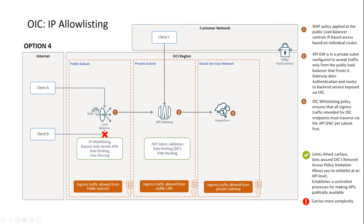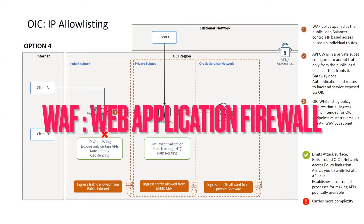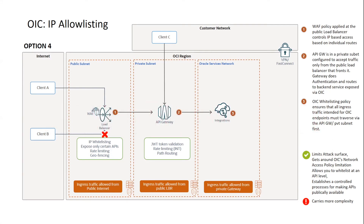So this is more fine-grained control — you can do this at an API level. Also, because we have a WAF policy, you can benefit from other features of the WAF. For those who don't know, WAF stands for Web Application Firewall. It has a bunch of access control policies, and IP whitelisting is one of those policies. Other capabilities include rate limiting, geofencing, and restricting request methods.